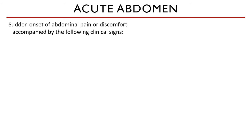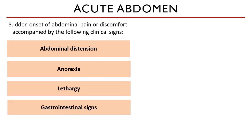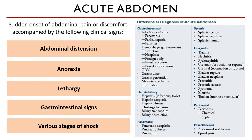An acute abdomen is the sudden onset of abdominal pain or discomfort accompanied by abdominal distension, anorexia, lethargy, gastrointestinal signs such as vomiting and diarrhea, and the patient being in various stages of shock. Since this condition is manifested by a variable set of clinical signs, it is a diagnostic challenge. More often than not, these conditions are emergent and critical once the patient is showing clinical signs.